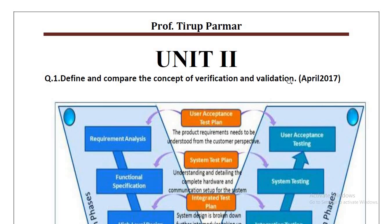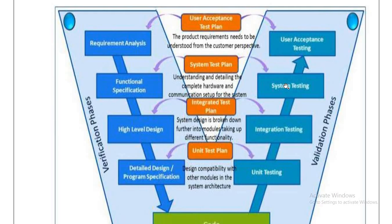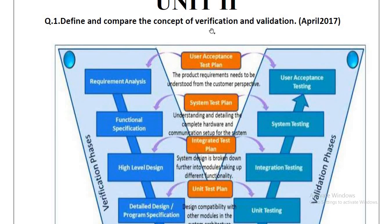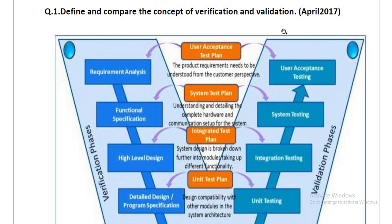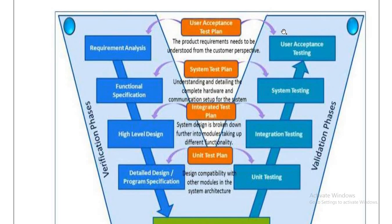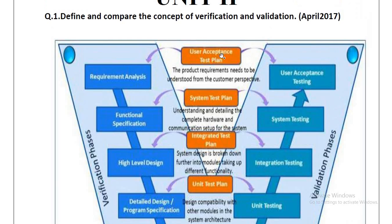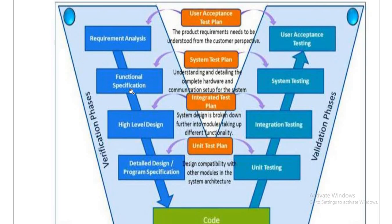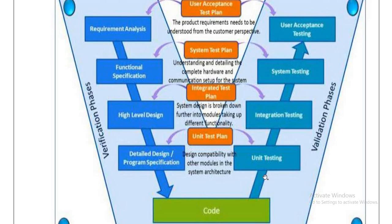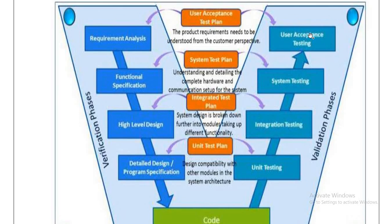I have provided a diagram here for verification and validation. In a very simple way, if we talk about the VV model — which we already learned about in SY Semester 3 in the software engineering subject — in the verification phase we have steps like requirement gathering or requirement analysis, then functional specification, high-level design, then detail program specification, then coding. After that comes the validation phase: unit testing, integration testing, system testing, and user acceptance testing.